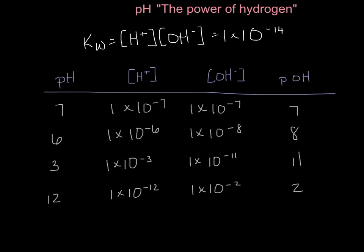As hopefully you've noticed, whatever your pH value is, your H⁺ concentration is going to be 1 times 10 to the negative of whatever your pH value was. If your pH value is 7, your hydrogen ion concentration is 1×10⁻⁷. Your hydroxide ion concentration is going to be 1×10 to the power of 14 minus that number, because H⁺ times OH⁻ needs to equal 1×10⁻¹⁴.